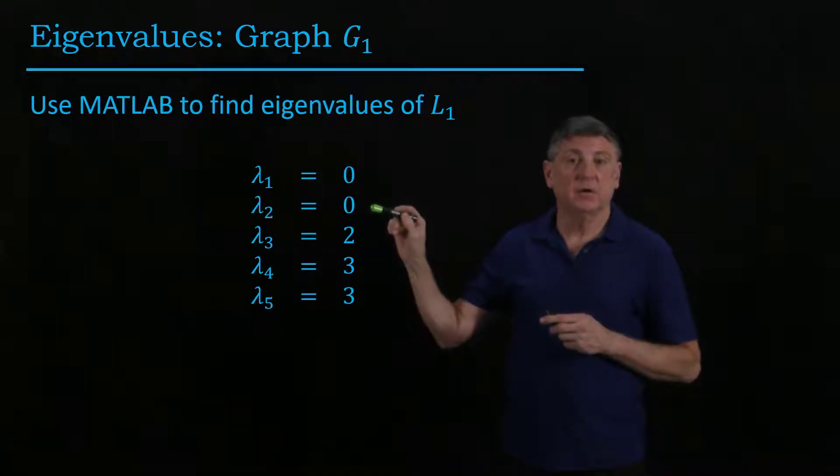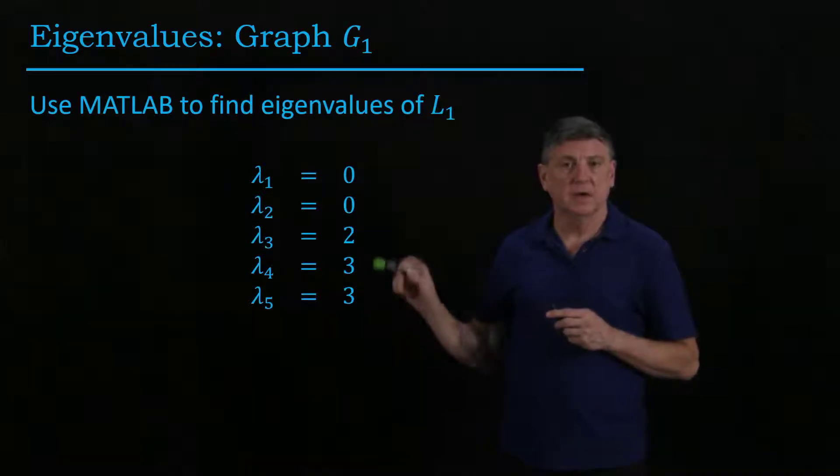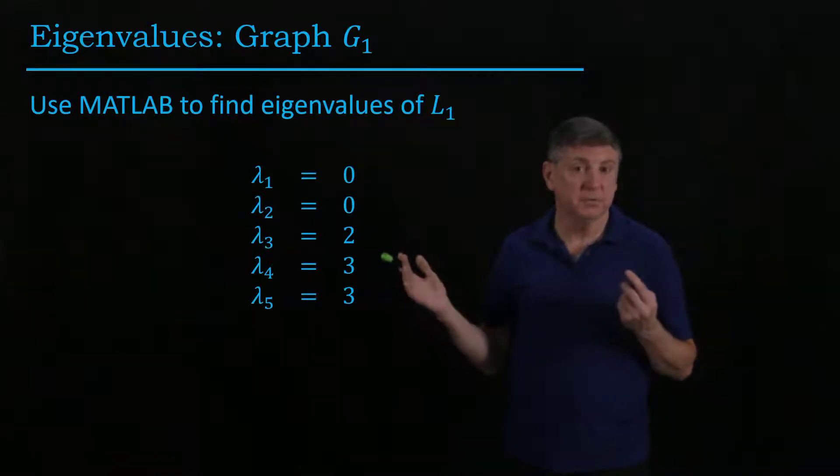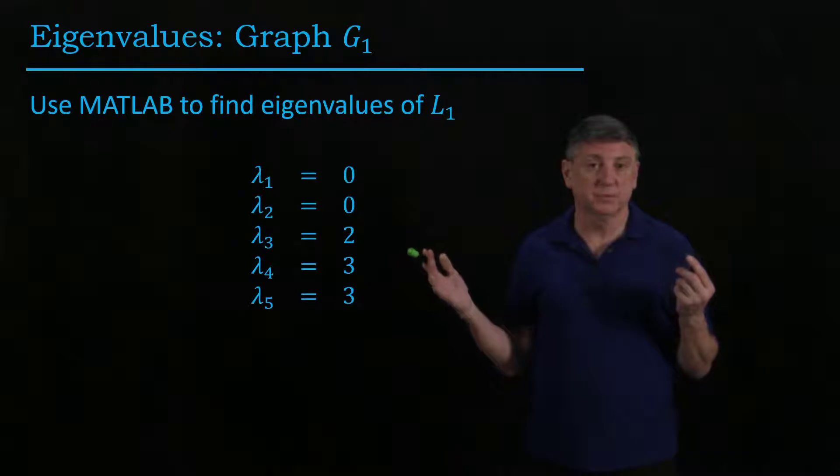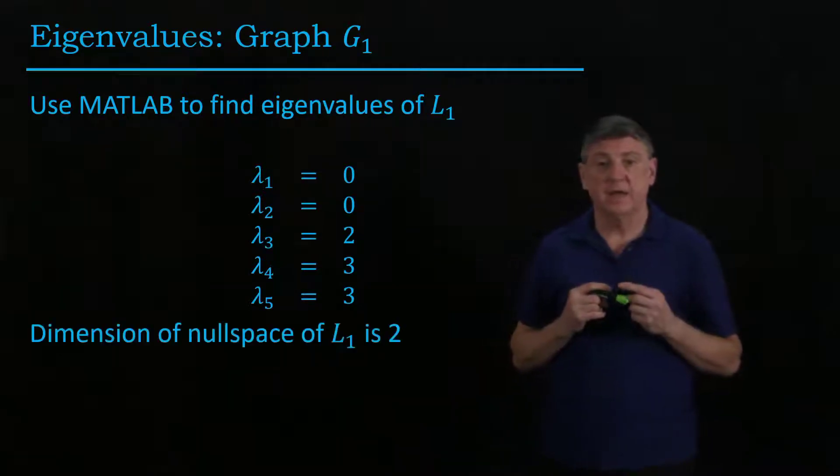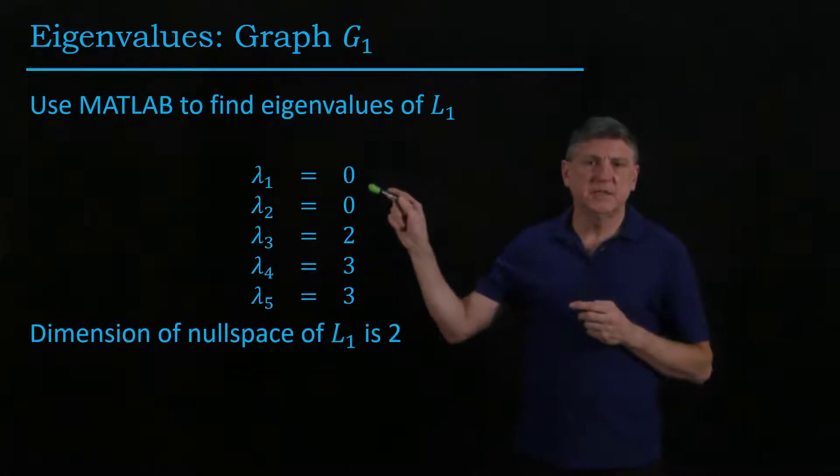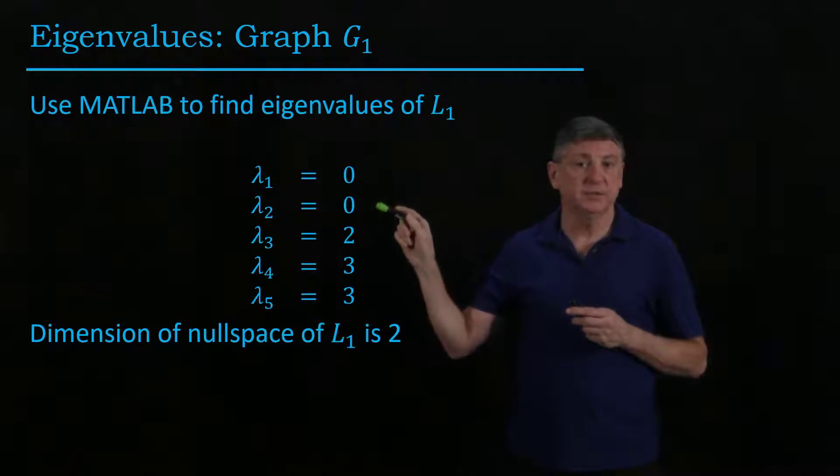We then find that there are these three other eigenvalues and they're very simple numbers. They're all simple positive integers and what we can see is the dimension of the null space here is two.